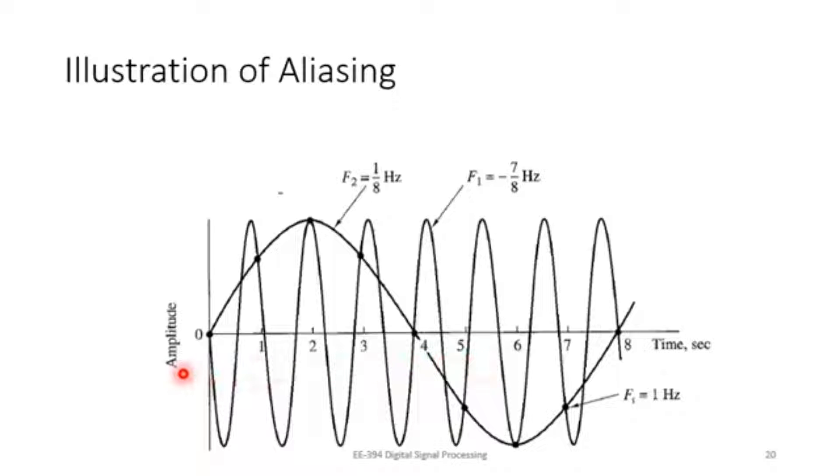Now, let's look at where these samples are taken. The first sample is taken at 0. Both of the signals, 1 upon 8 hertz and minus 7 by 8 hertz, both are at the same point. So the same identical value will be recorded. Then at 1 second, again, the signal 1 by 8 and minus 7 by 8 both are intersecting each other. So when the sample will be taken at 1 second, again, they will generate the identical value.